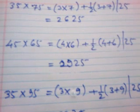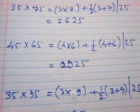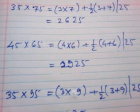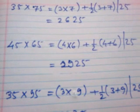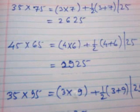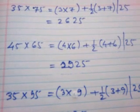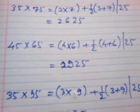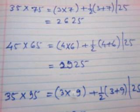Similarly, we can see the examples here. That is 25 into 75, where we can see 3 and 7 are the foremost digits of the two numbers. First of all, we will multiply the two numbers, 3 into 7, that is 21.